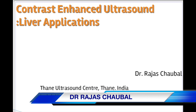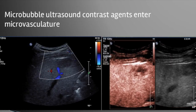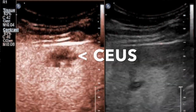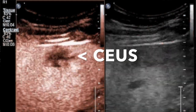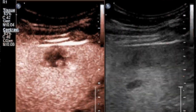Hello everyone. I'm going to be talking on how we can use contrast-enhanced ultrasound, particularly in the liver. Let me introduce the concept of contrast ultrasound agents. They are basically microbubbles which diffuse through the microvasculature, and as a result we are able to see lesions — whether in the liver or anywhere else in any of the organs — much better.